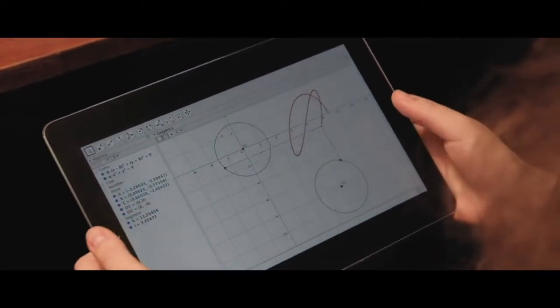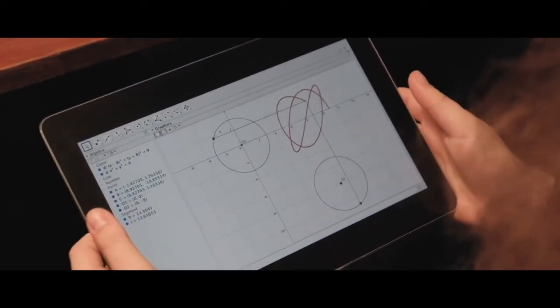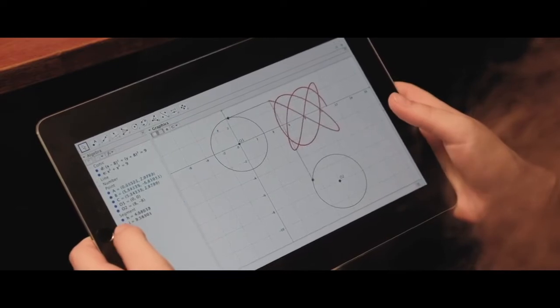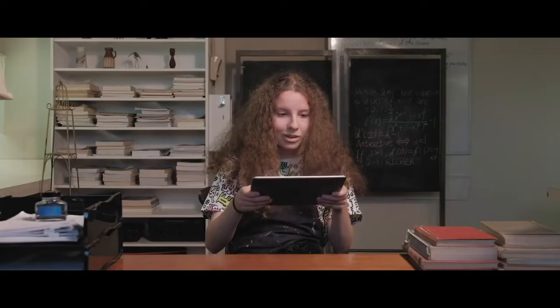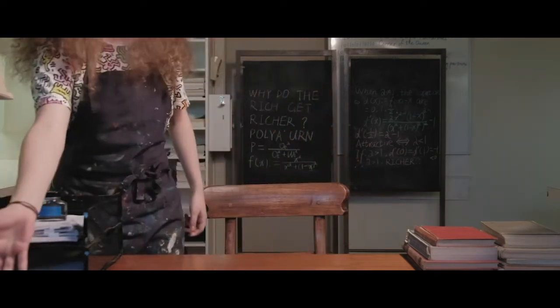As you can see, the point on the left-hand circle travels exactly four thirds faster than the other point, which draws this graph. Oh, this is cool. Thanks.